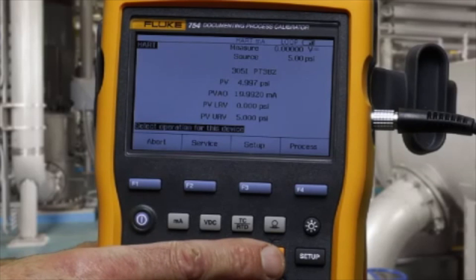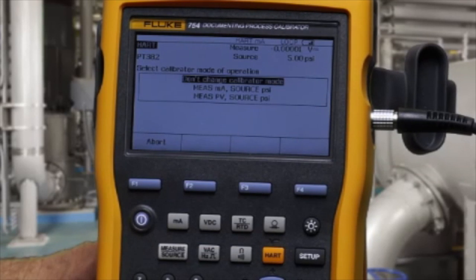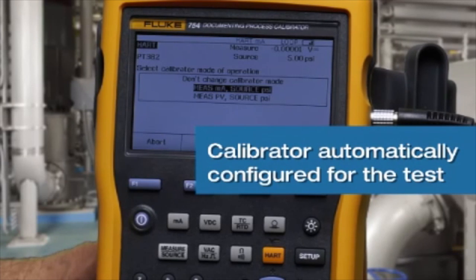To initiate the test, select HART again. Select measure milliamp source PSI.